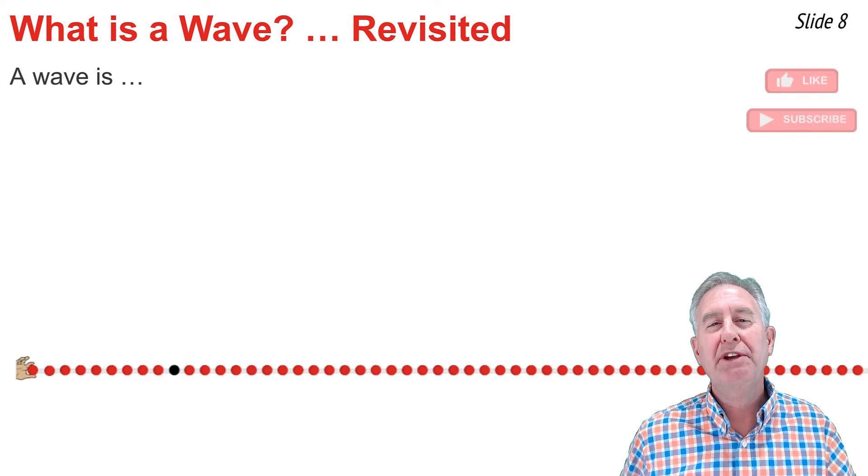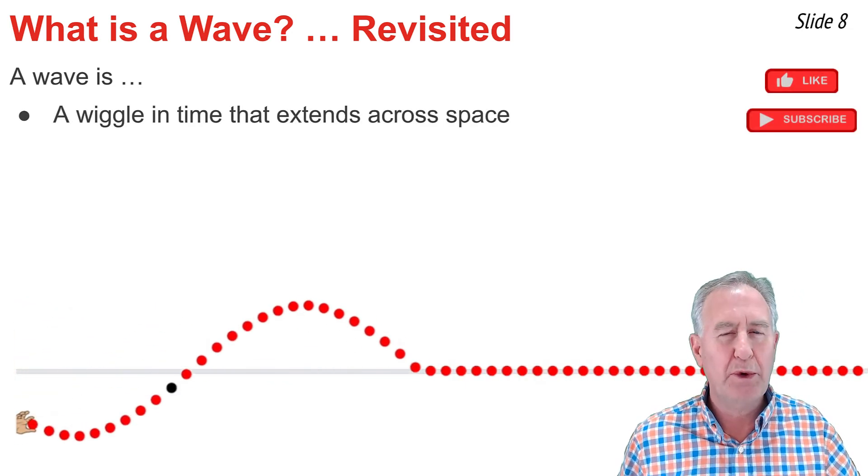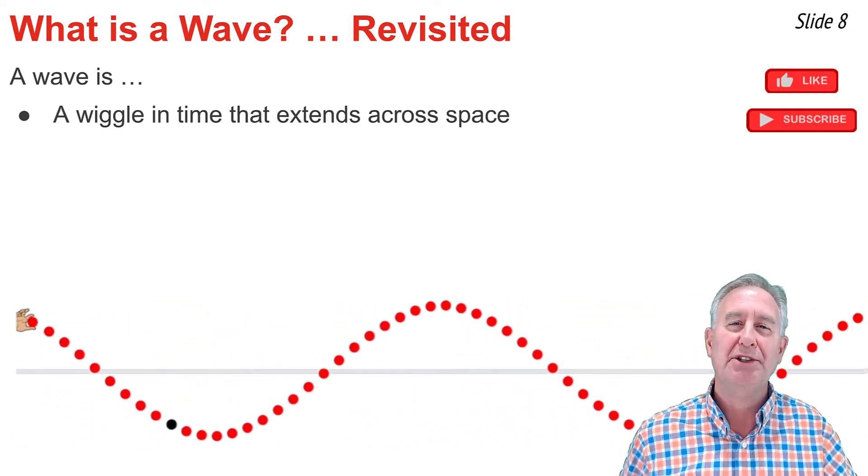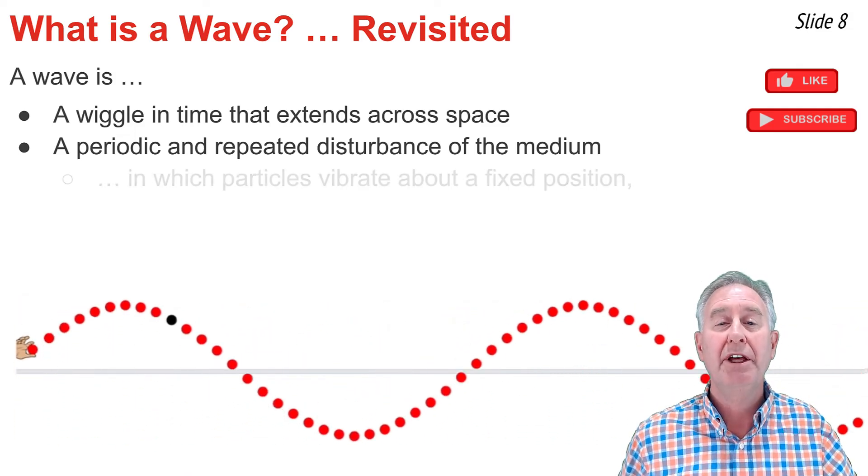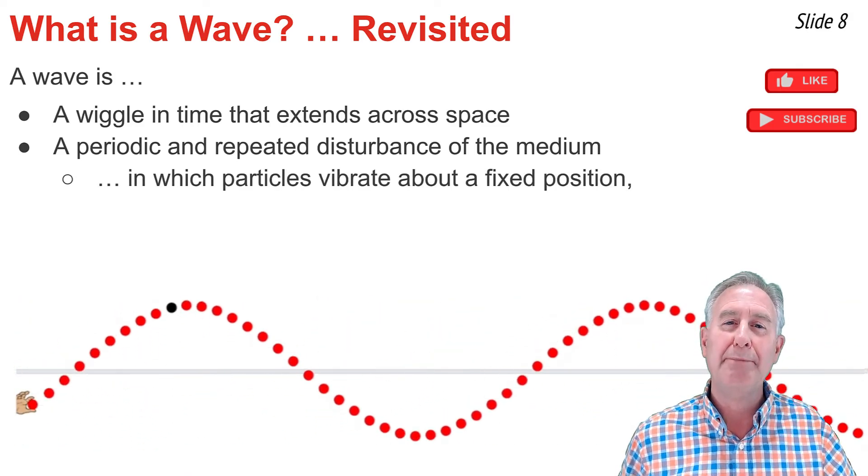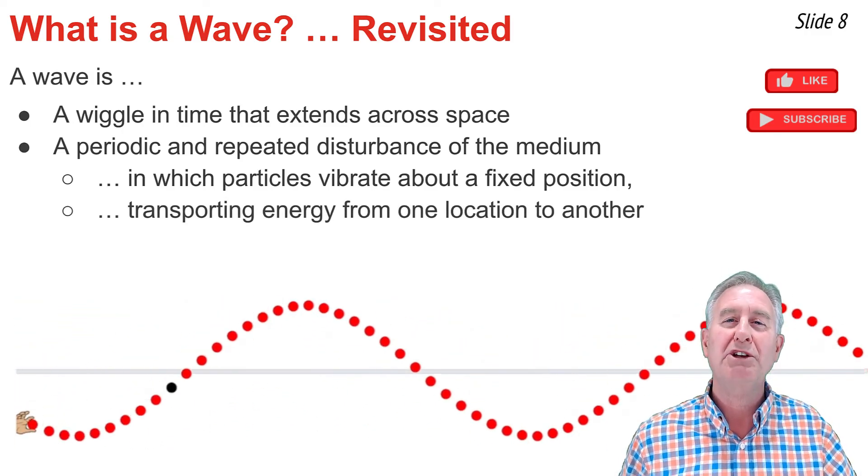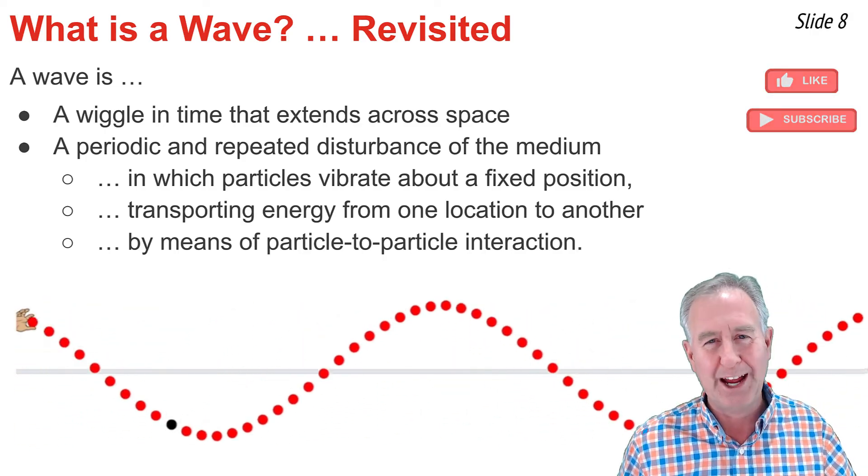So let's revisit the question, what is a wave? A wave results when you have a collection of wigglers because it's a wiggle in time that extends itself through space. A wave is a repeated and periodic disturbance of the medium in which particles vibrate about a fixed position transporting energy from one location to another by means of particle-to-particle interaction.